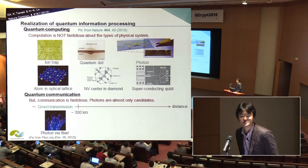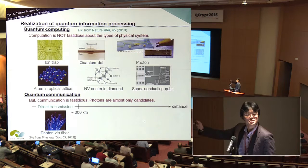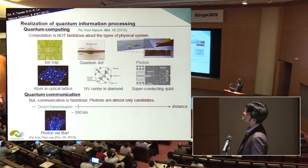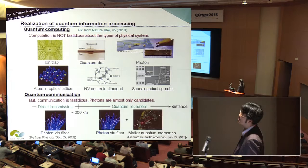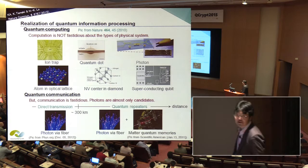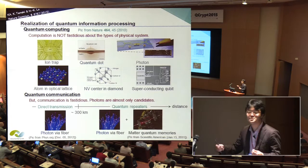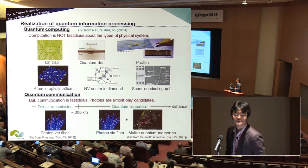This limitation comes from the photon loss, which increases exponentially with channel distance. In order to extend the achievable distance of quantum communication, we need to use quantum repeaters. Somebody says that we need to use not only photons, but also matter quantum memory. However, this situation looks very strange in the sense that all the other applications in quantum information science can be done by using only a single system.